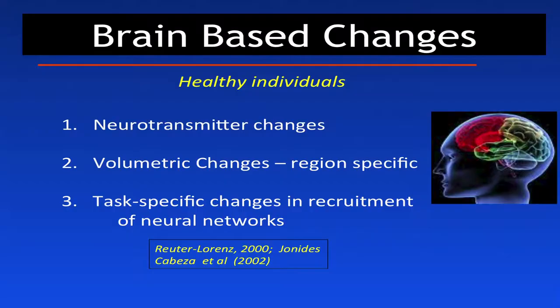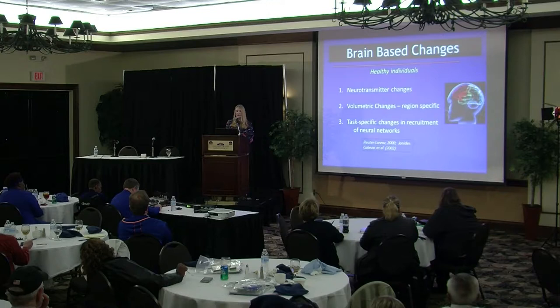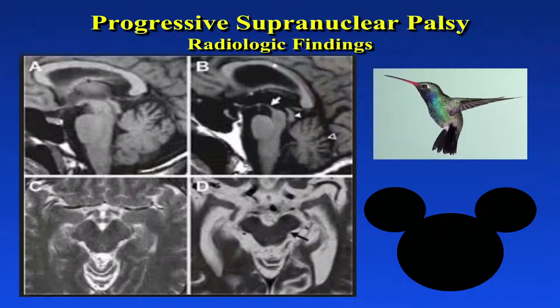In healthy aging, there are changes in neurotransmitters, brain size, and networks — the connections between different brain regions — which we need to reinforce to preserve memory. In PSP and CBD, even more changes occur. On MRIs of PSP patients, we can see structural changes in the brain, particularly in the brainstem. The pons becomes the brain stem and connects up to the midbrain, which is primarily affected in PSP.